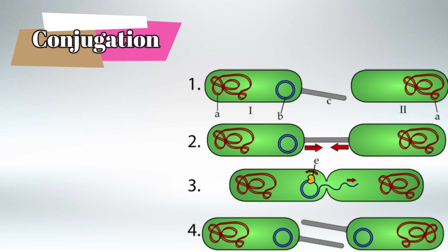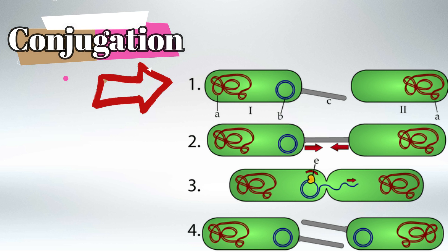Now let's talk about conjugation. So some bacteria have a sex pilus and we call these bacteria F positive, and other bacteria don't have these sex pili and we call this F negative. Keep in mind that the sex pilus is encoded by the bacterial plasmid not the bacterial chromosome.